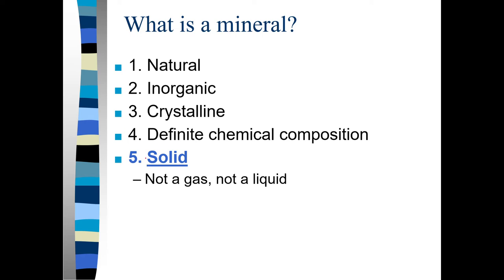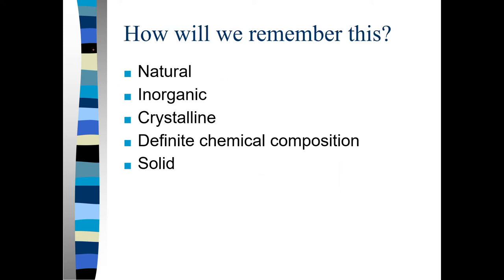A mineral has to be a solid — it cannot be a gas or a liquid. Oil is not a mineral: first, oil is organic just like coal; second, it's not a solid. So the five properties are: naturally occurring, inorganic, crystalline, definite chemical composition, and solid.